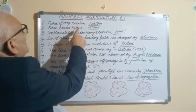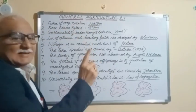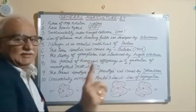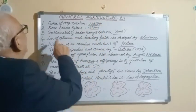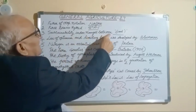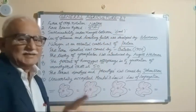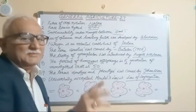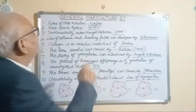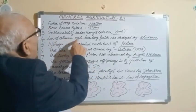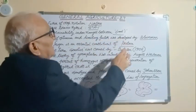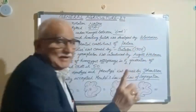The first Tobacco Hybrid is GTH1. The Sustainability Index ranges between 0 and 1. The Law of Optimum and Limiting Factor was developed by Blackman.